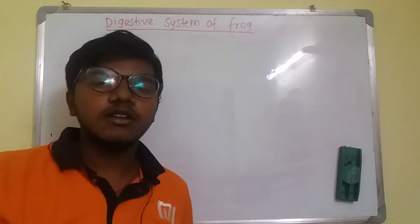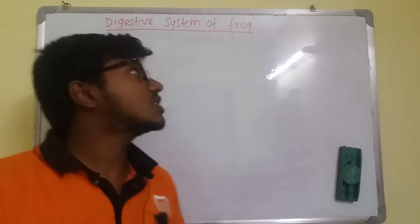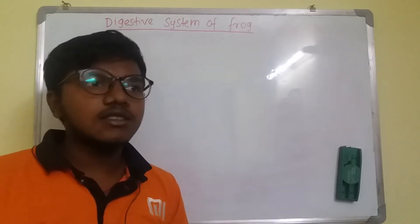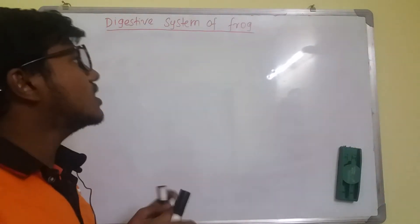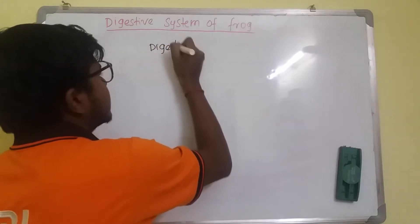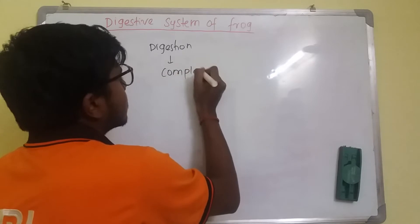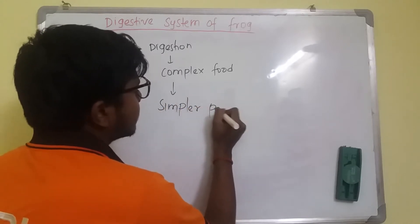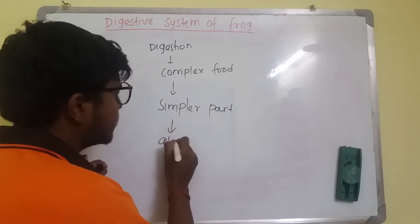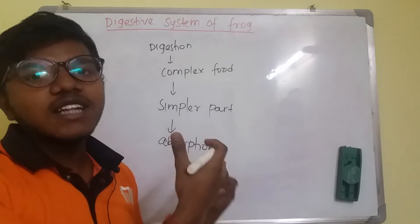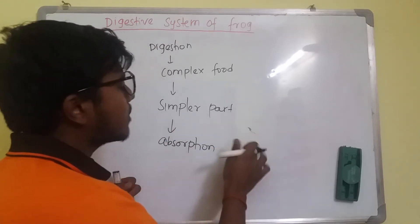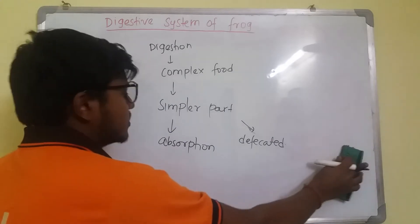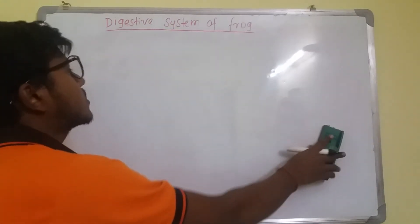Hi guys, I'm Akash Rautan, welcome to Akash Biology. In today's lecture we're dealing with the digestive system of frog, which is the most demanded topic on our YouTube channel. The digestive system is composed of organs concerned with the process of digestion. Digestion is a process in which complex food that we ingest is broken down into simpler parts used for absorption and daily activities, while the rest is defecated.